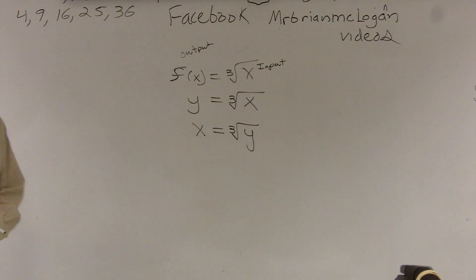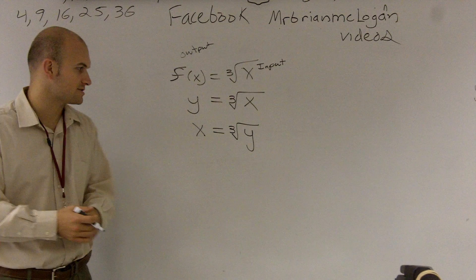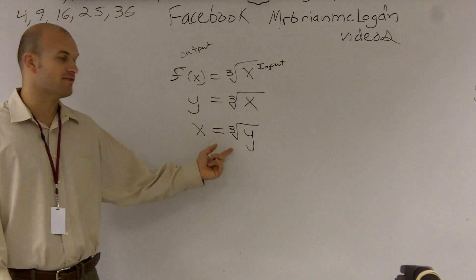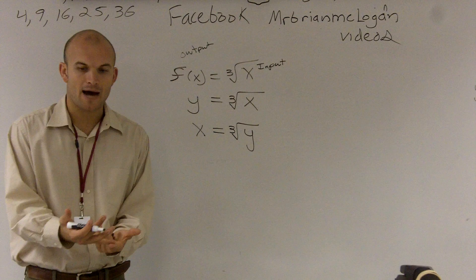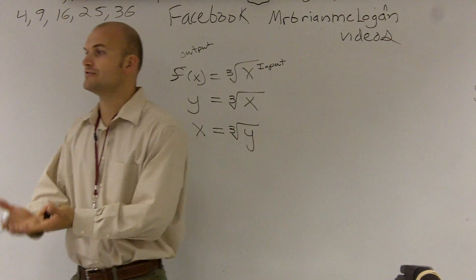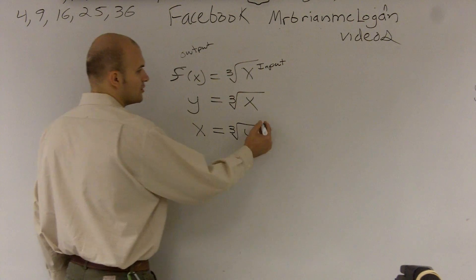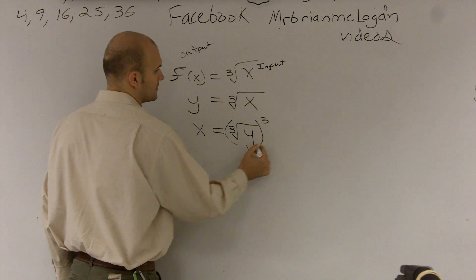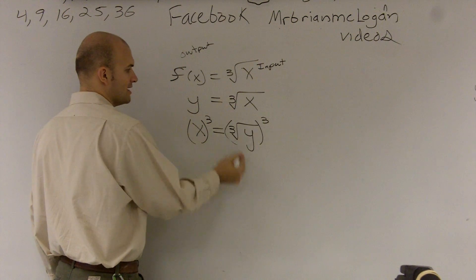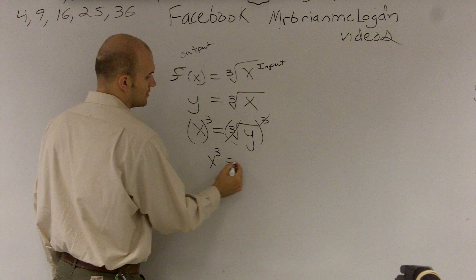Then the next thing we want to do is solve for y to find our inverse. So we have to get rid of this cube root. Remember, the inverse operation of addition is subtraction, the inverse operation of multiplication is division, and the inverse operation of a cube root is to cube it. Whenever you do it on one side, you have to do it on the other side. So we cube it — those cancel out, and I'm left with x cubed equals y.